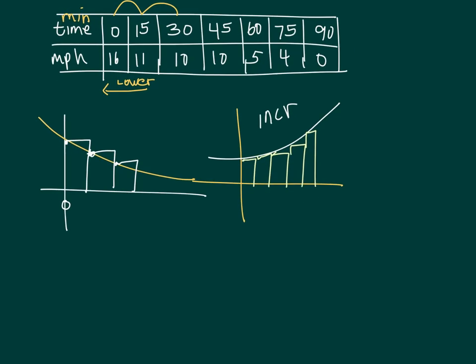11 times the width of the interval, and you might want to say times 15. However, notice this is in miles per hour, so I have to change that to 15 over 60 to get that in hours, and then plus the next one, 10 times 15 over 60, and you should get your answer.